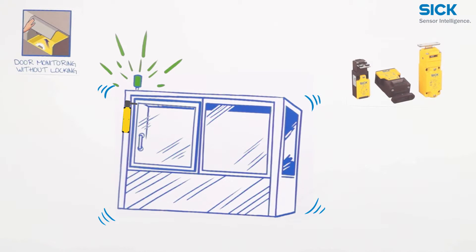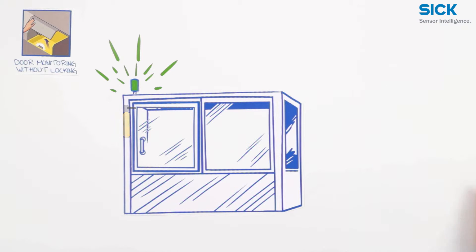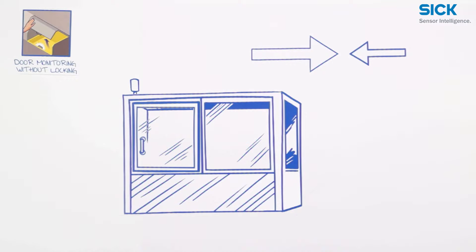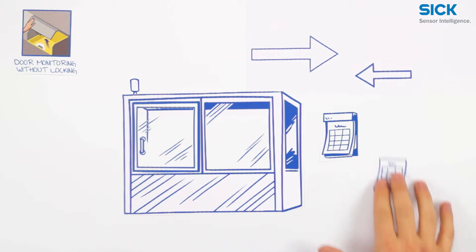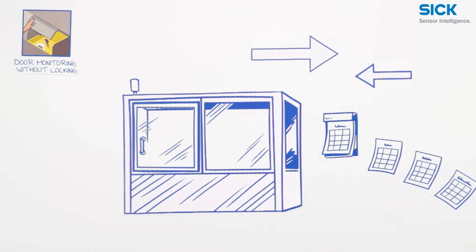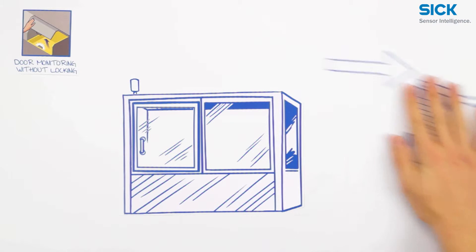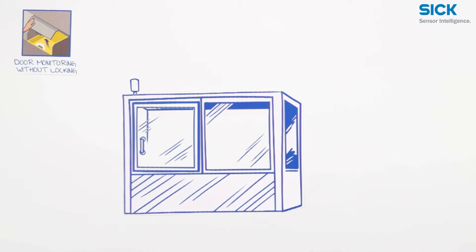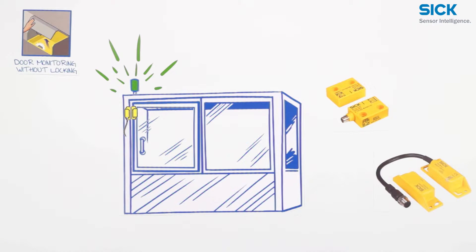But what if it is too difficult to ensure the precise guidance of an actuator, or if the door gets misaligned as time passes, or if you have an application with strict hygiene standards? In these cases you should use non-contact safety switches, which are resistant to offset and contamination.